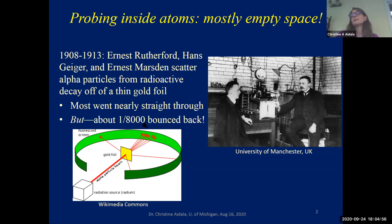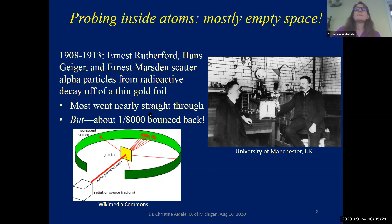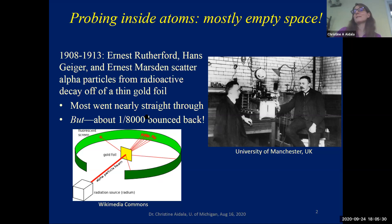However, they saw that about one in 8,000 bounced back. This is a nice example of how it's important to do your experiment more than a thousand times. They had to do it hundreds of thousands — even millions — of times to get enough statistics. The first backscattered particle might look like a fluke, but if you collect enough statistics, you see that on average it's pretty consistent: about one in 8,000 bouncing off at some sharp angle.